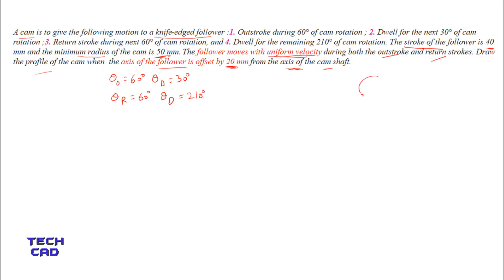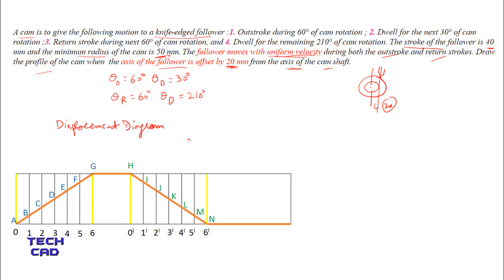The axis of the follower is offset by 20 mm from the axis of the camshaft. First, you have to make the displacement diagram — I already explained how to make this in a previous video. The angles are: 60 degrees for outstroke, 30 degrees for dwell, and 60 degrees for return stroke. From A to G the follower is rising, G to H it is in dwell, and H to N it is returning.